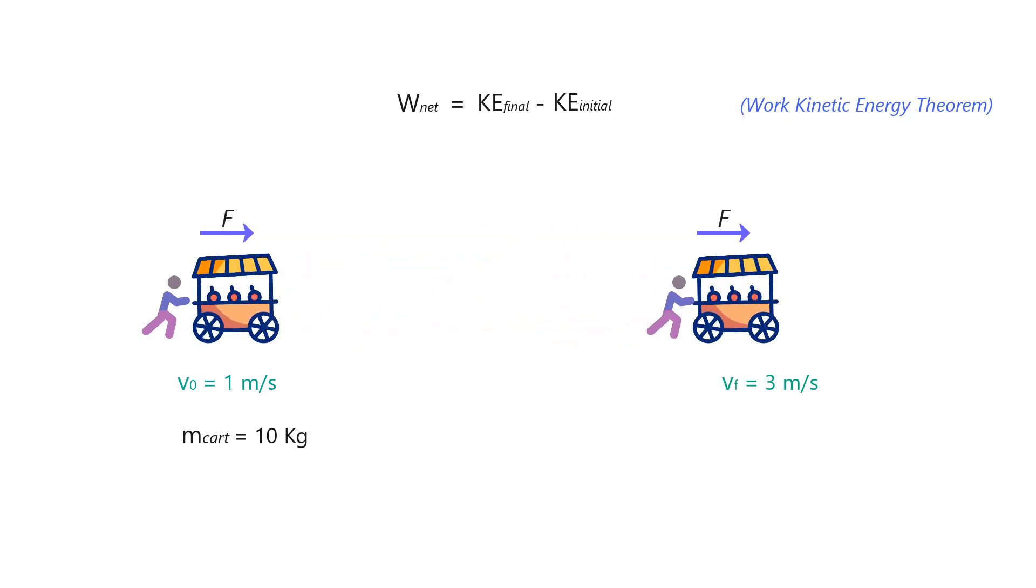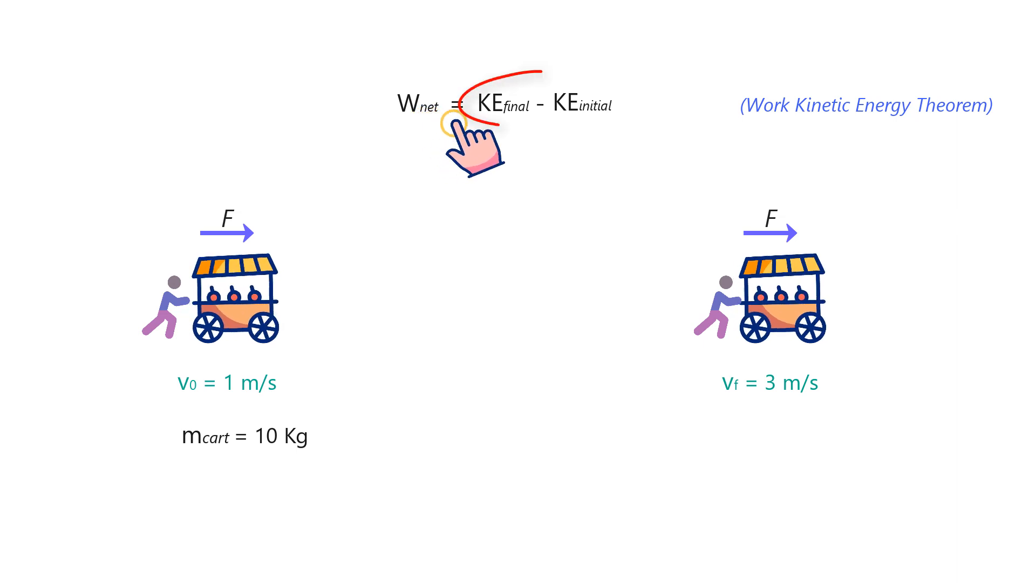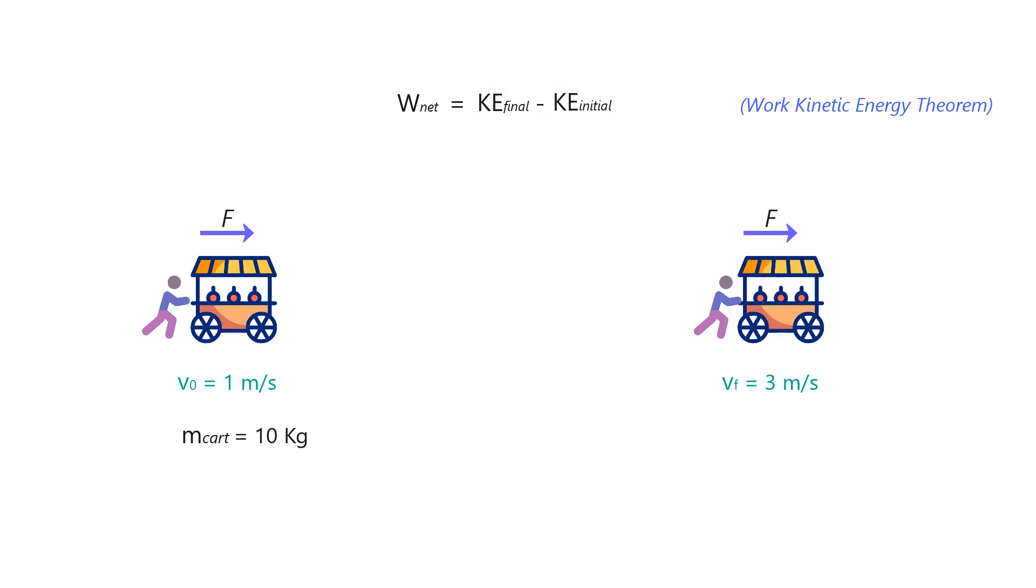Let's say you ran up to a cart that was already moving with a velocity of 1 meter per second and applied a certain continuous constant force that increased its velocity to 3 meters per second. What you can say about this situation is that the force you applied did work on the cart equal to the change in kinetic energy of the cart. When you calculate this by putting the initial and final magnitudes of velocity in this equation,